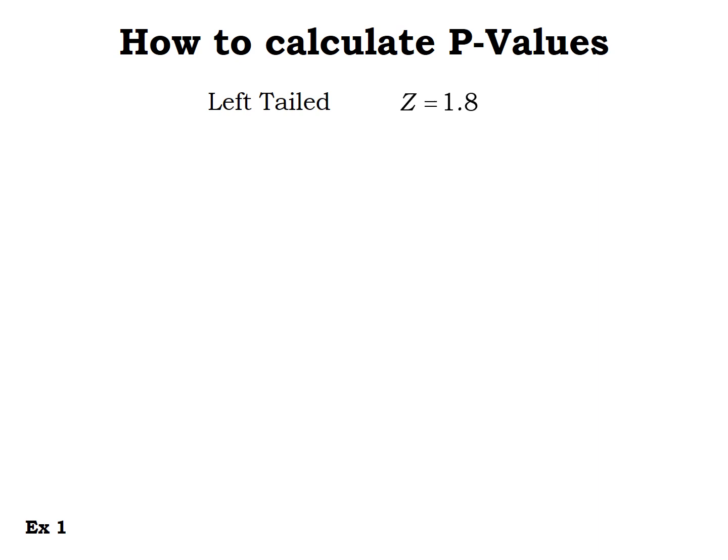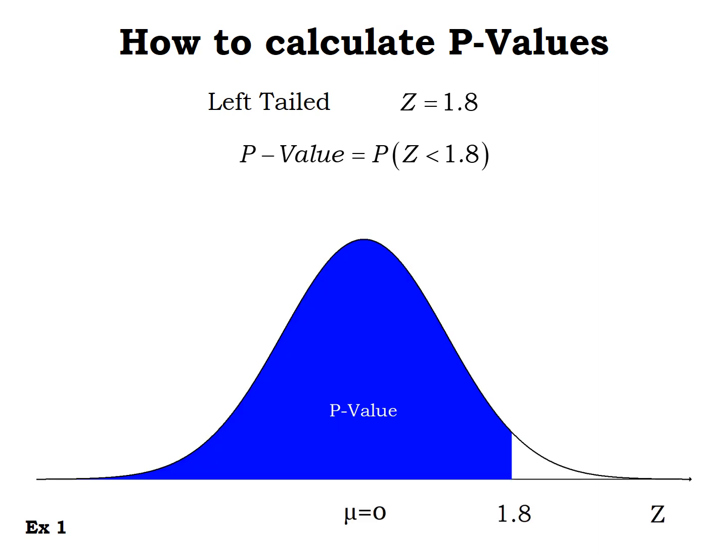For our first example, let's do a left-tailed test with a z-score of 1.8. By definition, the p-value is the probability of getting a z-score that's smaller or to the left of 1.8. We draw a z-graph, the p-value is the area to the left. Using normal CDF from negative infinity to 1.8, with mean zero and standard deviation one, the p-value is 0.9641.